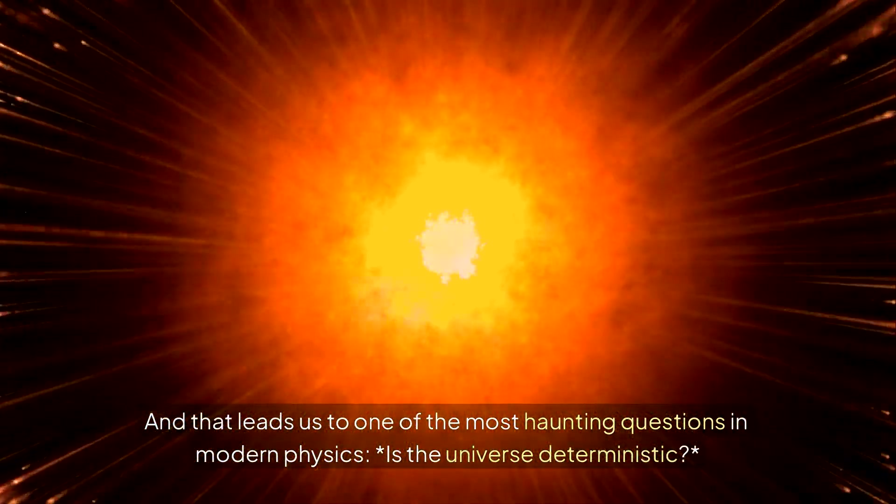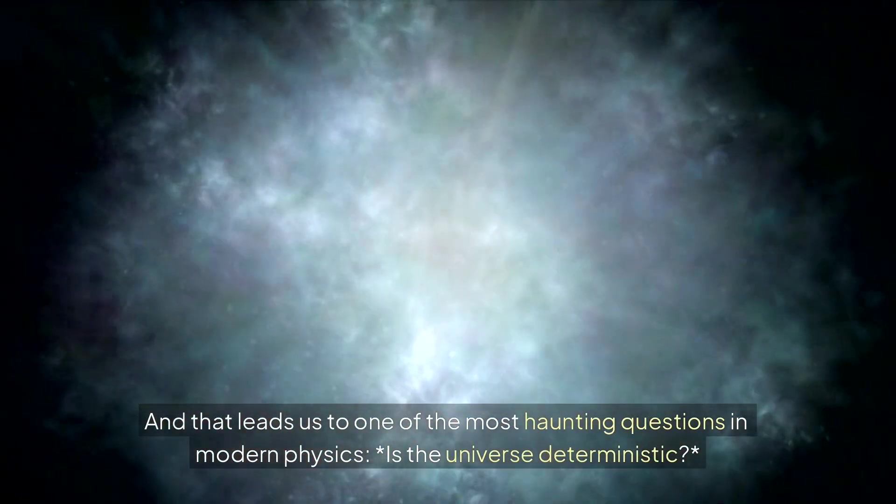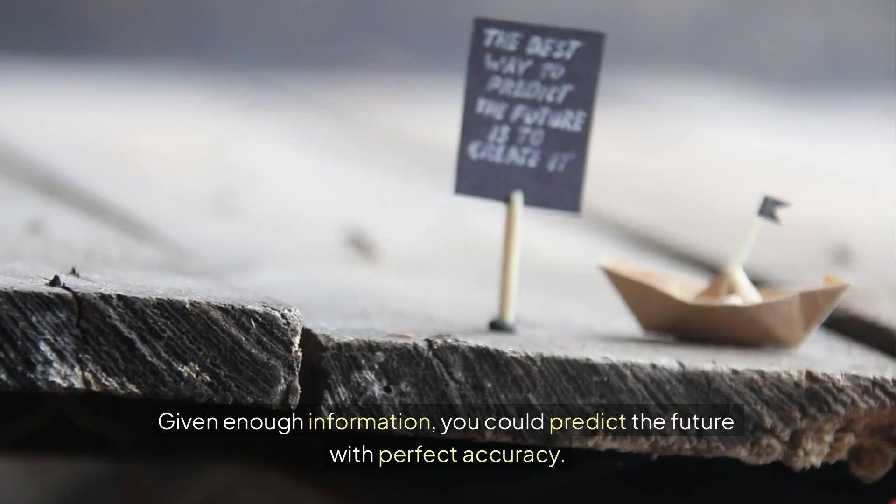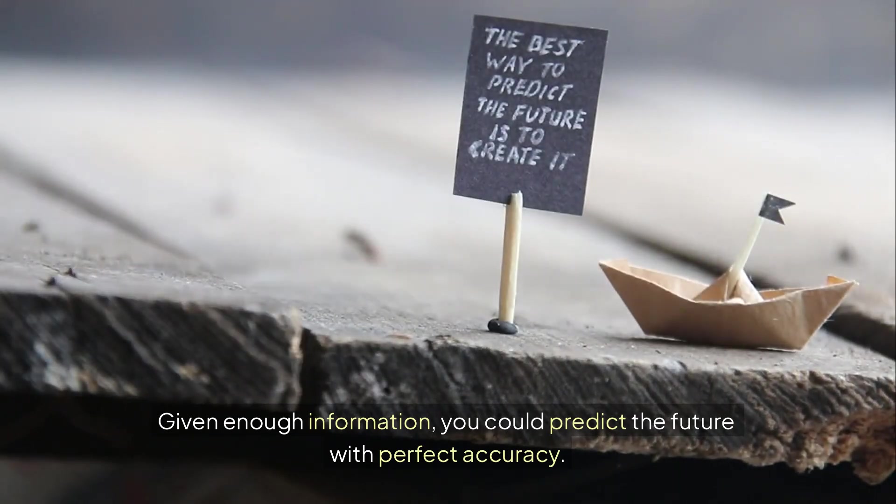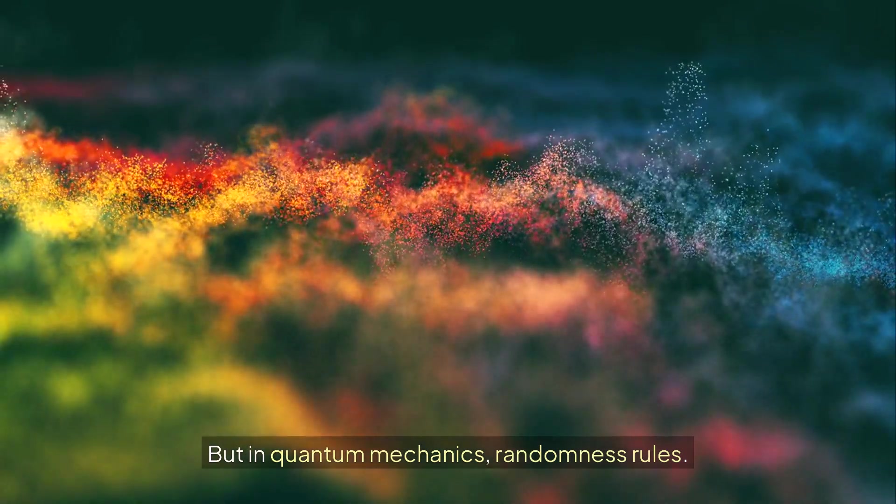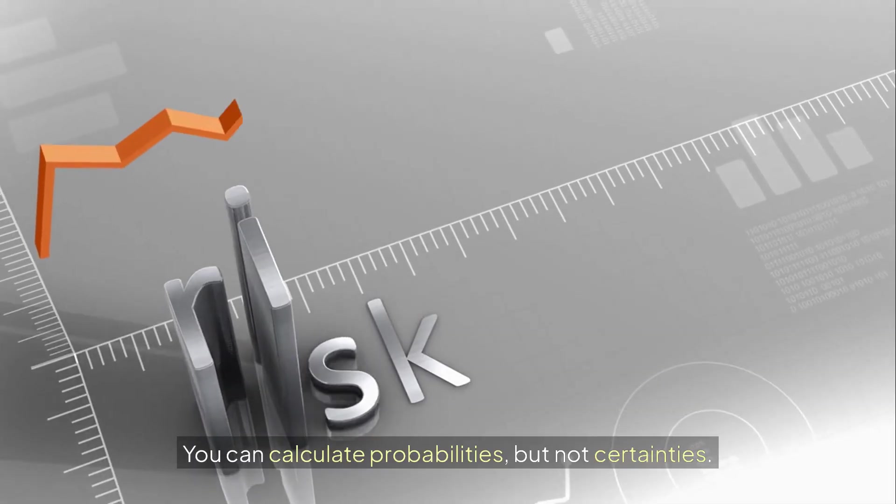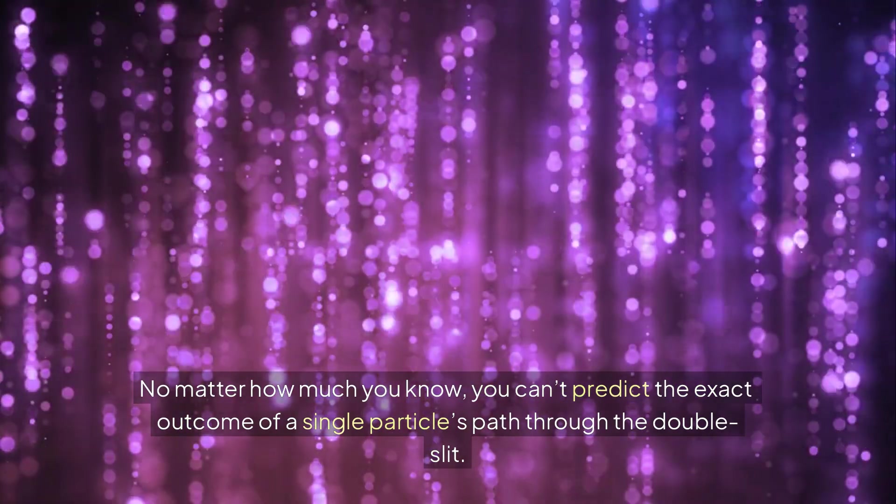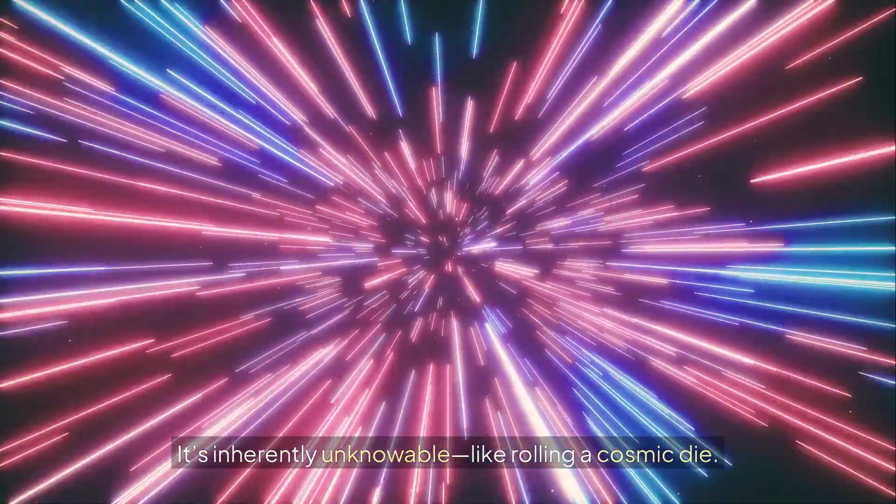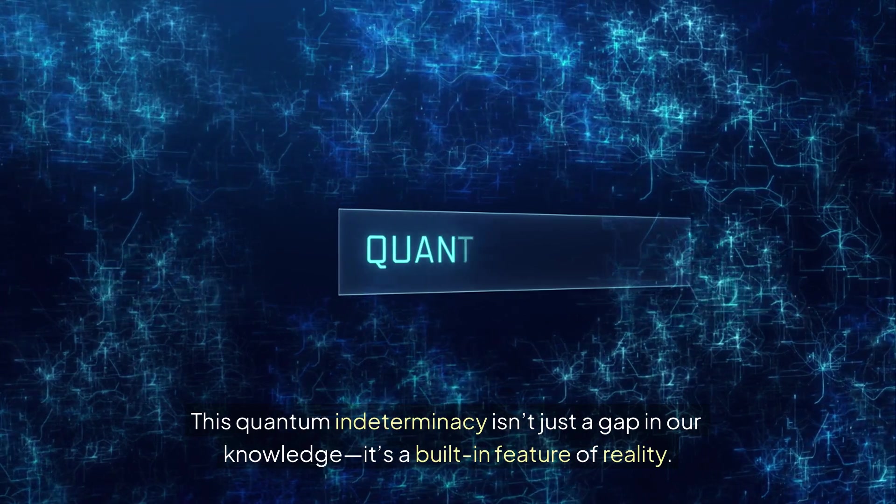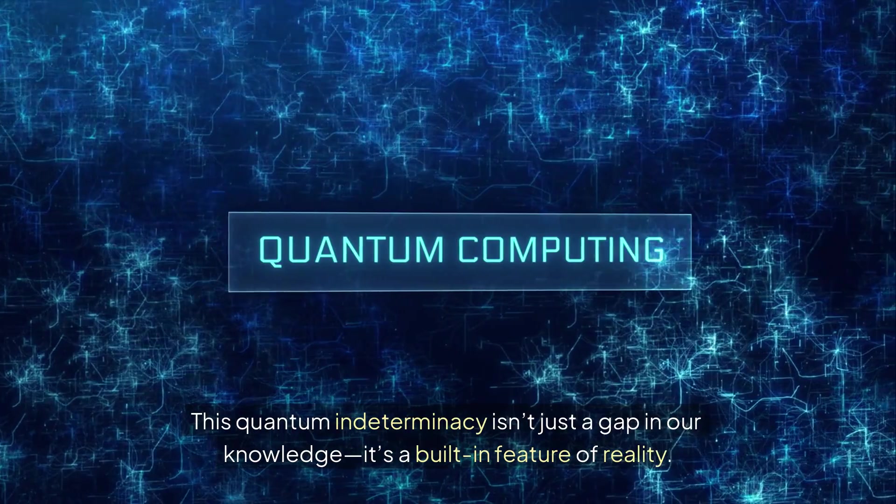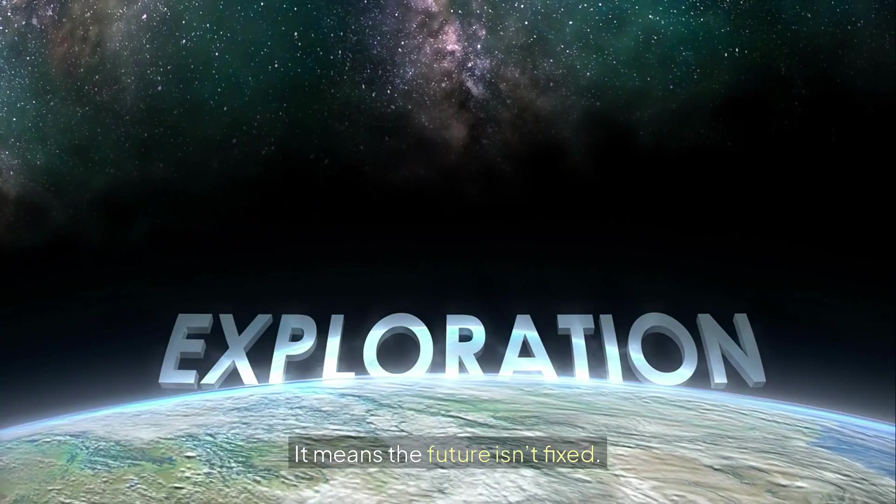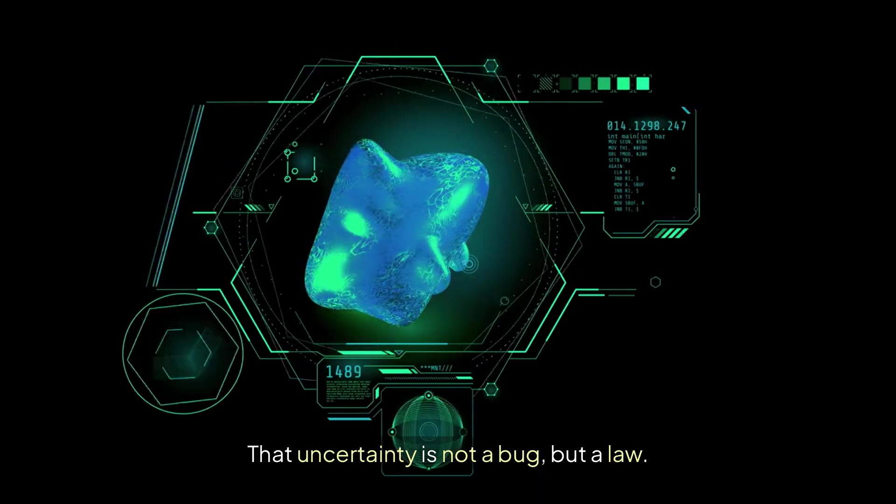And that leads us to one of the most haunting questions in modern physics. Is the universe deterministic? In classical physics, everything obeys cause and effect. Given enough information, you could predict the future with perfect accuracy. But in quantum mechanics, randomness rules. You can calculate probabilities but not certainty. No matter how much you know, you can't predict the exact outcome of a single particle's path through the double slit. It's inherently unknowable, like rolling a cosmic die. This quantum indeterminacy isn't just a gap in our knowledge, it's a built-in feature of reality. And that changes everything.